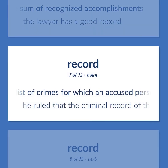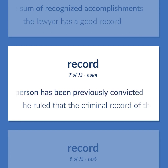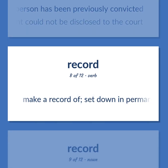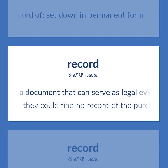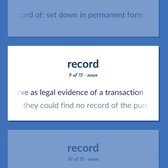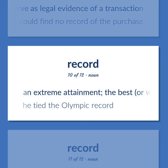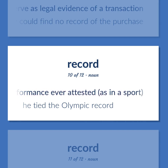A list of crimes for which an accused person has been previously convicted. He ruled that the criminal record of the defendant could not be disclosed to the court. Make a record of; set down in permanent form. A document that can serve as legal evidence of a transaction. They could find no record of the purchase. An extreme attainment — the best, or worst, performance ever attested, as in a sport. He tied the Olympic record.